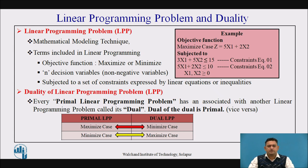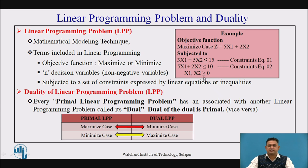The linear programming problem is a mathematical modeling technique in which the terms included are: objective function — it may be of maximized case or minimized case — with n number of decision variables which are non-negative variables, and it is subjected to constraints expressed in inequality or equality equations. This example highlights the objective function of a maximized case, subjected to two constraints with decision variables x1 and x2, which are restricted by sign.